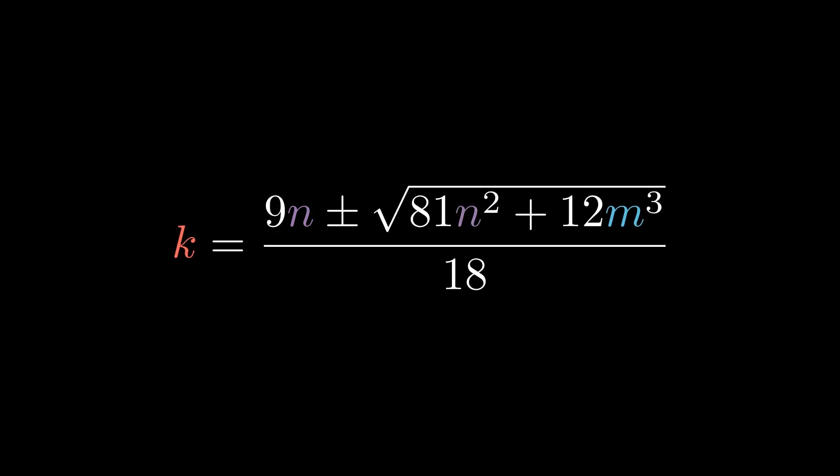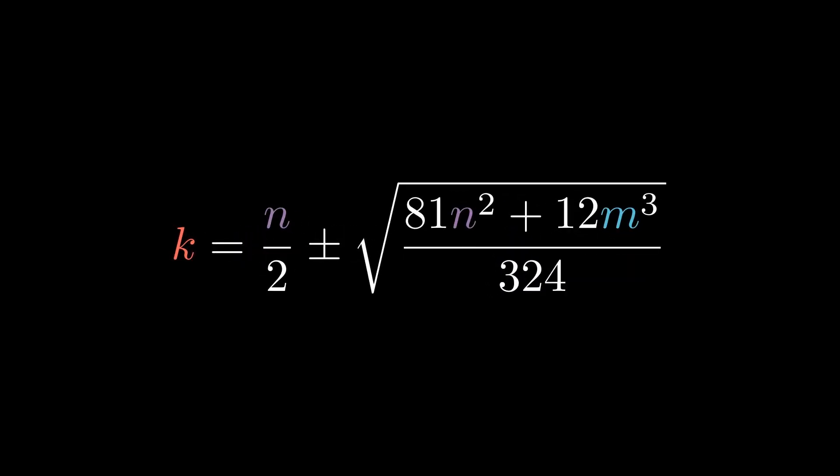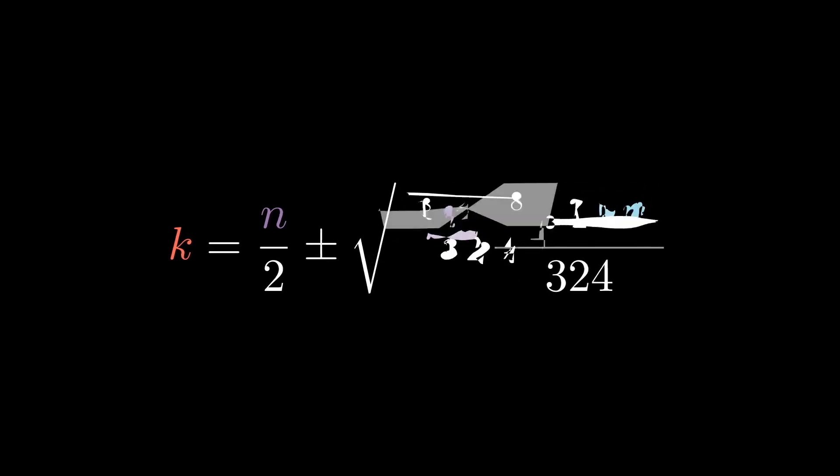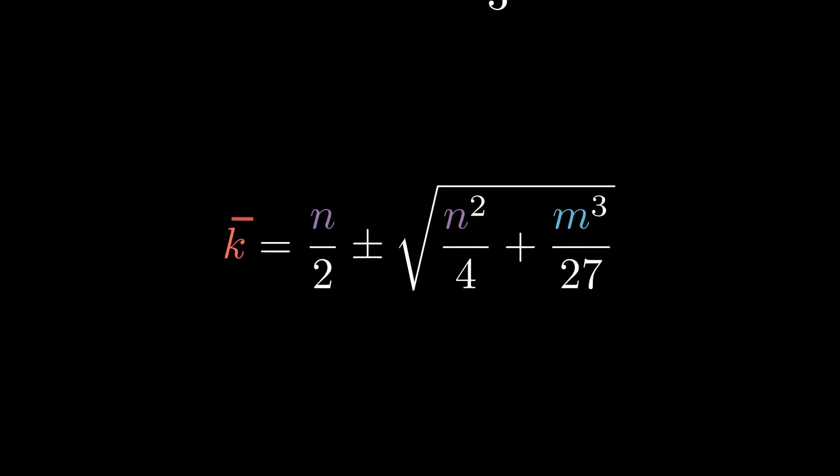Now, instead of having everything as one fraction, we split them into 2 and simplify the first fraction. For the second fraction, we realize that 18 can be rewritten as the square root of 324. Since there's a square root term in both the numerator and denominator, we can rewrite it as one square root term with the fraction inside. The fraction inside can then be split into 2 and simplified. This will give us a solution for k.